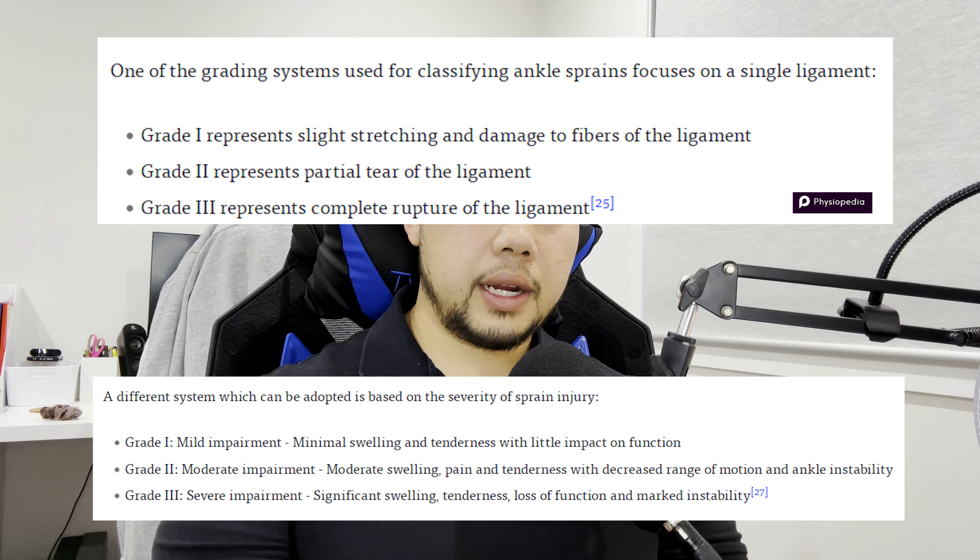In terms of how we treated this person — for any grade — the first thing we want to do is protect the ligament as much as we can. To do that we use certain techniques to alleviate stress from that ligament. In this case I used some strapping tape to hold his ankle in a position where it wouldn't be under stress. For severe grades where the person is unable to put a lot of pressure through the ankle, the guideline now is to get them into a moon boot.